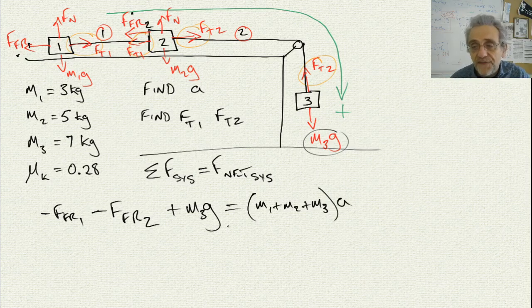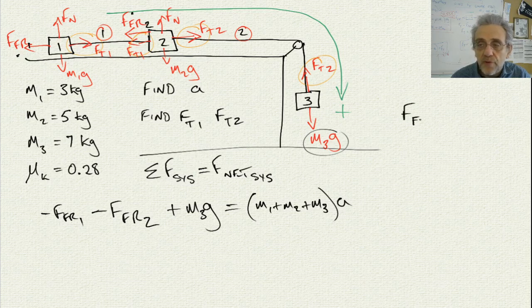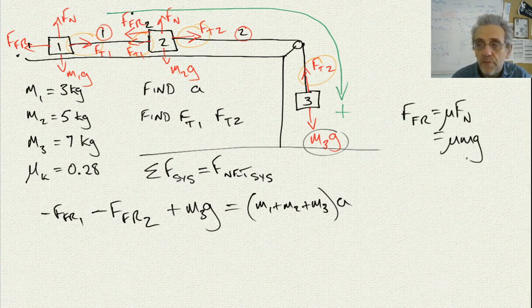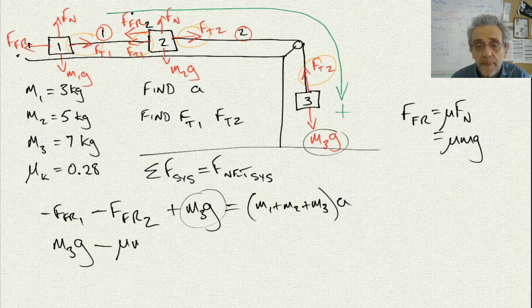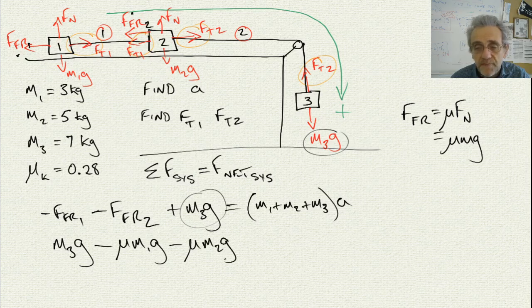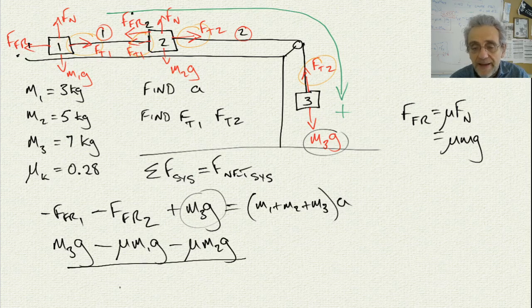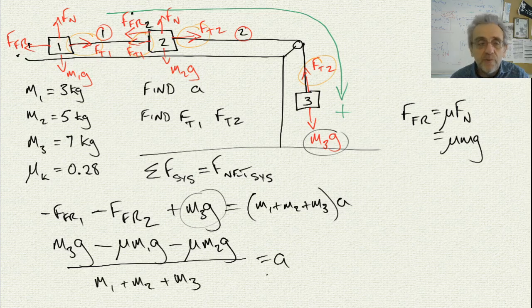Now to find acceleration, I can replace the friction variable with its equation, which is equal to mu Mg. And I'm also going to rearrange these. I'm going to put this term first, and then I'll subtract these two, just because I don't like to start with a negative. So I'll go M3G minus, now force of friction one, is mu M1G minus mu M2G. And I'll divide all that by the total mass, and that will equal my acceleration.